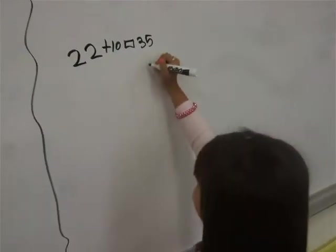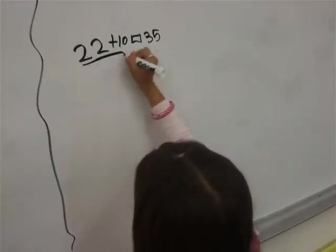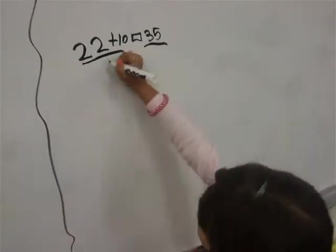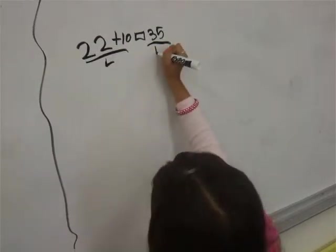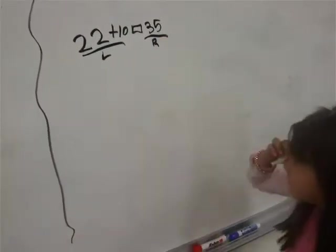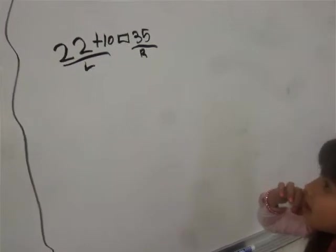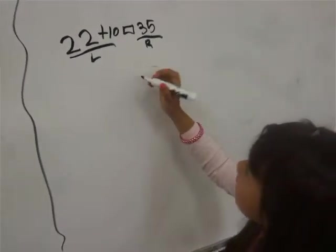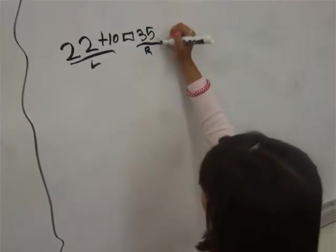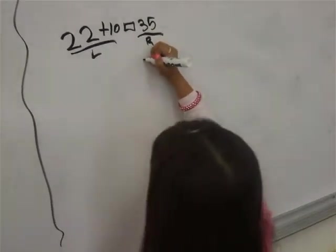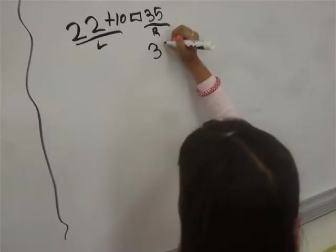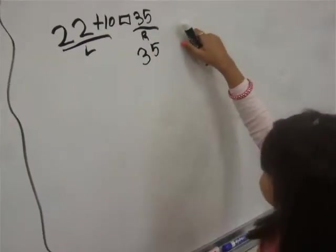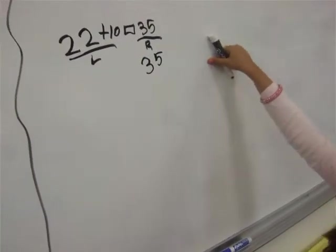So we are going to put the lines L, R. So on both sides of the equation we have the left and the right. Then we put 35 down here because we don't have to add or subtract.